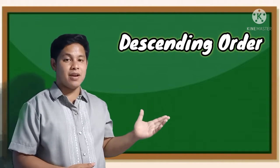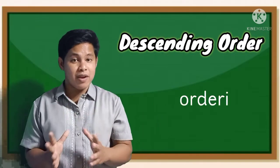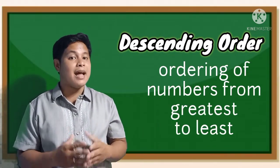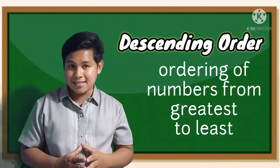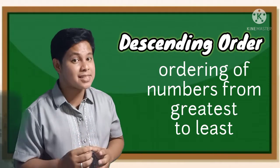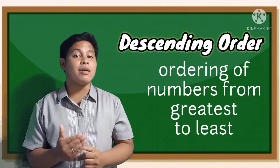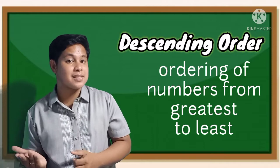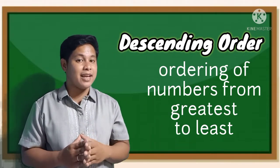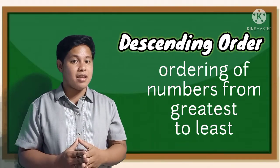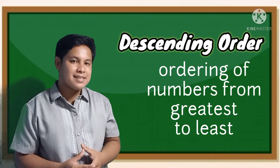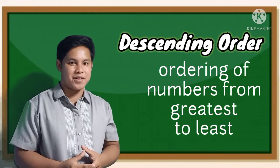Descending order. When you arrange the numbers from greatest to least, meaning you start from the biggest going to the smallest — that kind of ordering is what we call the descending order.